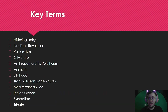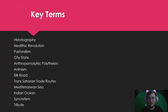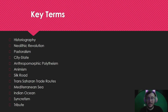Let's start with our key terms. The key terms for today are: Neolithic Revolution, Historiography, Pastoralism, City-State, Anthropomorphic Polytheism, Animism, Silk Road, the Trans-Saharan Trade Route, the Mediterranean Sea, the Indian Ocean, Lateen Sails, Dhow Ships, Syncretism, and Tribute.